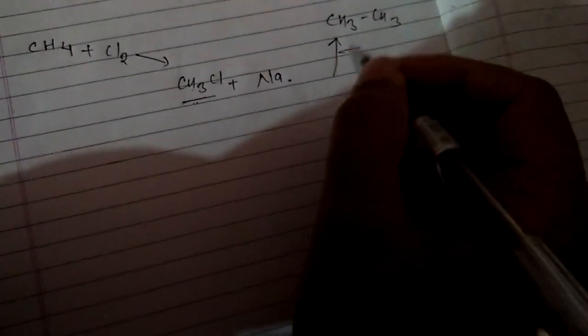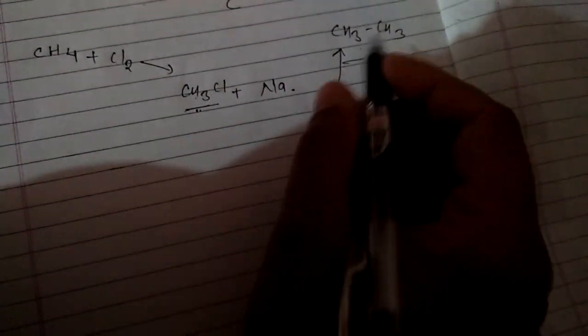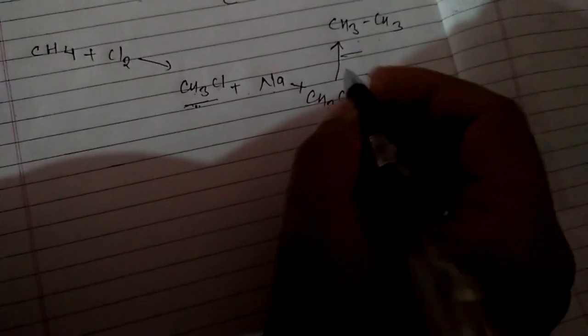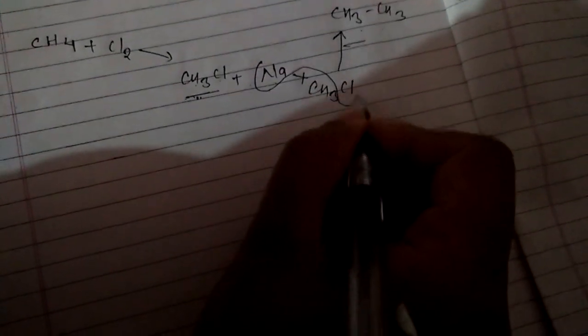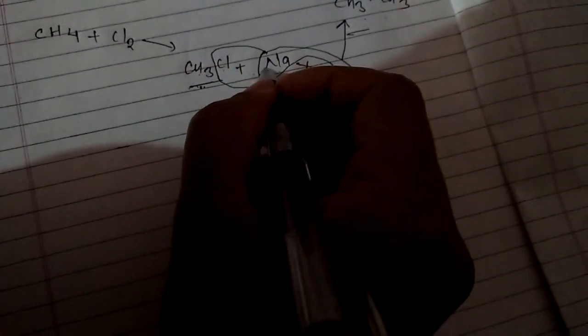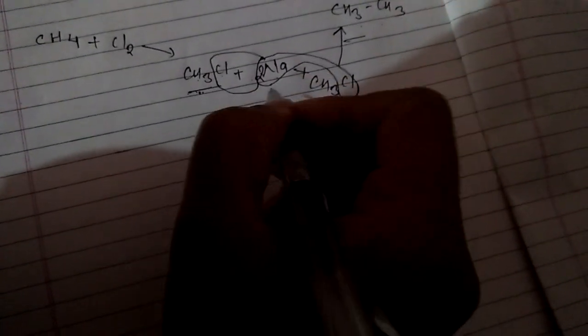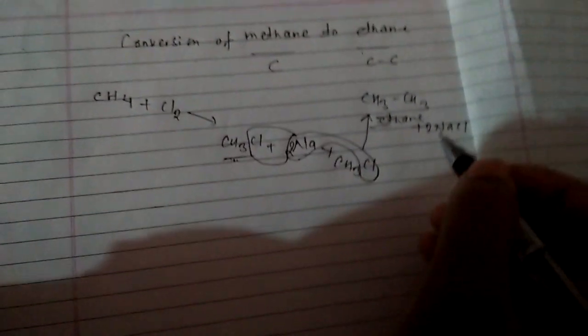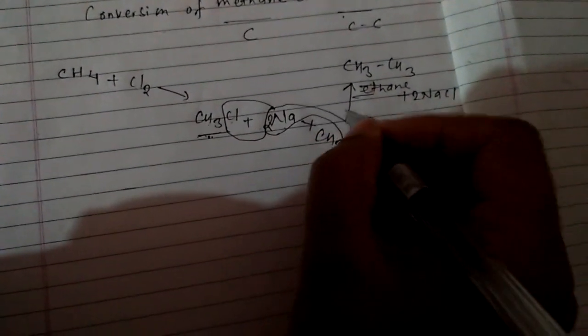One carbon to double carbon. So CH3Cl plus Na, and here we use two moles of haloalkane. This sodium takes Cl from this haloalkane and another from here, so we use two Na. So two NaCl is formed and double number of carbon, ethane, is formed in this reaction using sodium in presence of dry ether.